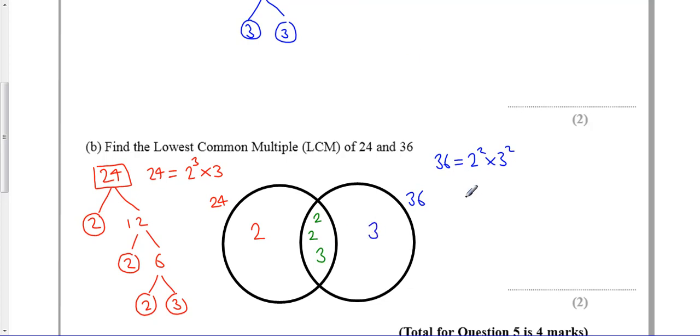Now I can find the LCM, the lowest common multiple. The lowest common multiple is everything in my diagram. Incidentally, sometimes you can be asked to find the HCF, and that's just equal to the overlap, that little bit in the middle. But we want the LCM.